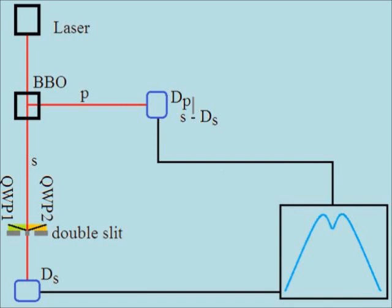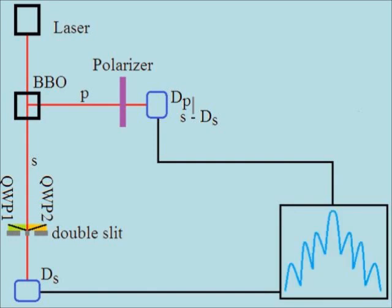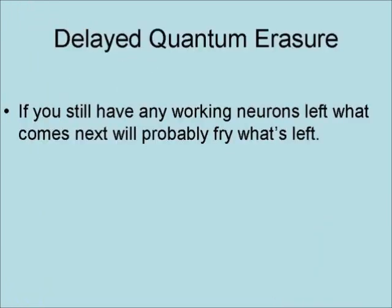Since the QWPs don't disturb the S photon, it proves that the detectors are not what changes the results of the experiment. Placing a polarizer in the path of the P photon destroys the information about the S photon's original polarization. As a result, it is no longer possible to know which slit the S photon went through, and the interference pattern comes back.